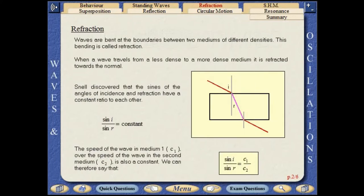Waves are bent at the boundaries between two mediums of different densities. This bending is called refraction. When a wave travels from a less dense to a more dense medium, it is refracted towards the normal. Snell discovered that the sines of the angles of incidence and refraction have a constant ratio to each other.